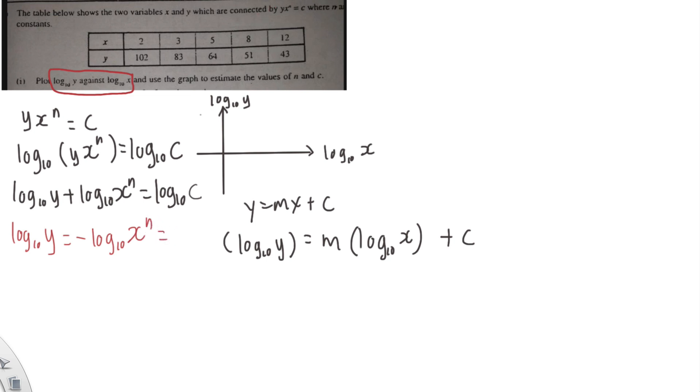sorry, plus log 10 c. Alright, then log laws also tell us that the n actually we can move in front to become multiple, isn't it? So this is log 10 y equals to negative n log 10 x plus log 10 c. Alright,